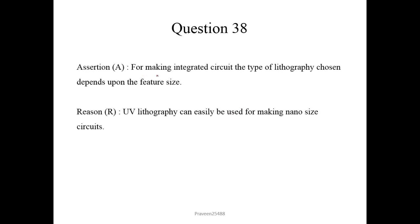Question number 38. For making integrated circuit, the type of lithography used depends upon the feature size. So the different types of lithography, like UV lithography, electron beam lithography, X-ray, or ion beam lithography depends on the feature size. And the reason is given. UV lithography can easily be used for making nano size circuits. So UV lithography is used to make nano size circuits in around 200 nanometer feature sizes. So here both statements are correct. But we cannot say this reason is the correct explanation of assertion. So here we will choose option 2 again.